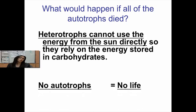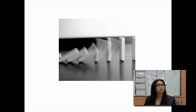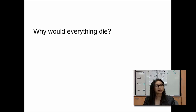If all the autotrophs were to die, there would be a huge problem because heterotrophs can't get energy from the sun directly. They need the autotrophs to turn it into a more usable form and bring it into living things. So we could also say no autotrophs equals no life. The reason for that is a domino effect: if autotrophs die, herbivores die, then carnivores die, omnivores, decomposers, and so on — a breakdown of the food chain. Think about why everything would die if autotrophs were to die.